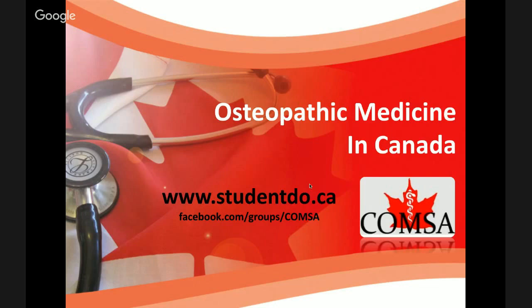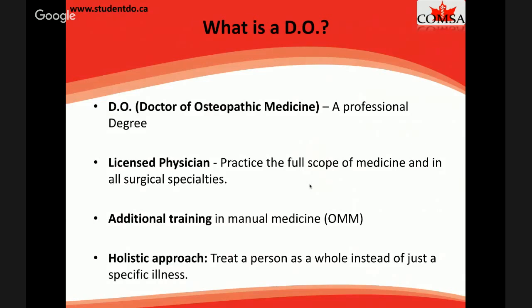A lot of you might be wondering: what is a DO? It kind of sounds like optometry or chiropractic — you're not really sure what it is. Well, DO is equivalent to an MD. It's a professional degree at the doctorate level, and it stands for Doctor of Osteopathic Medicine. In the US, North America, and many countries worldwide, the DO is the professional equivalent of and is a fully licensed physician, just as an MD is.